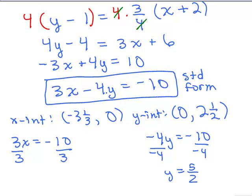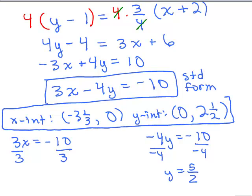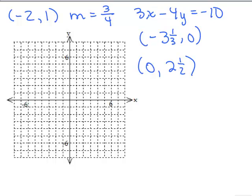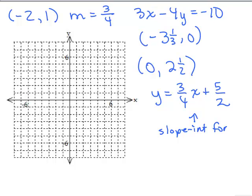So I've got the equation of the line in standard form. I also know the x-intercept and the y-intercept. We were given the point negative 2, 1 and slope of 3-fourths. By using the point-slope formula, we got that 3x minus 4y equals negative 10 in standard form. The x-intercept was negative 3 and 1-third, 0, and the y-intercept was 0, 2 and 1-half. Since I know the slope and the y-intercept, the slope-intercept form is y equals 3-fourths x plus 5-halves.